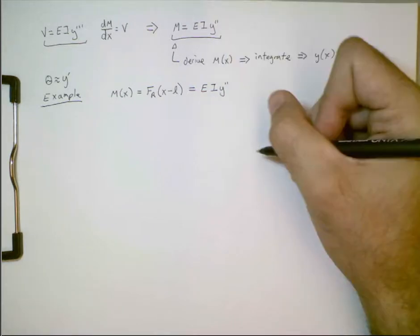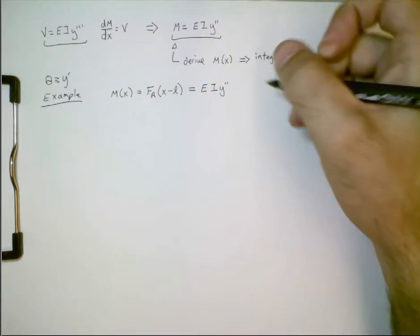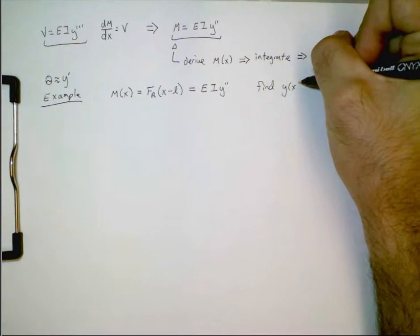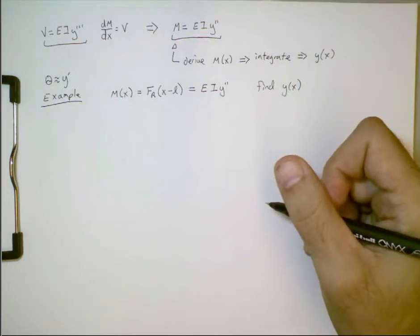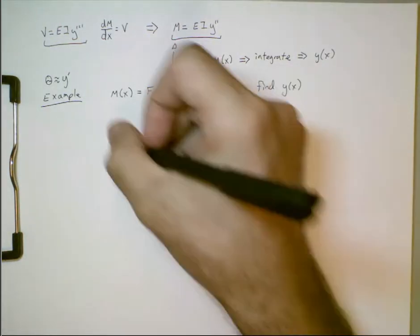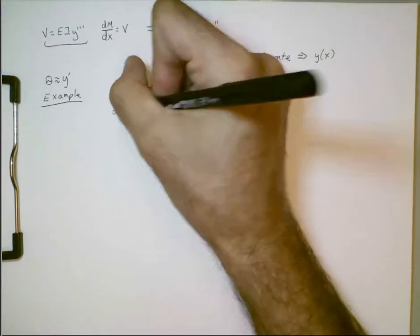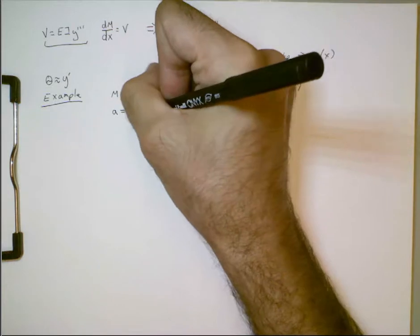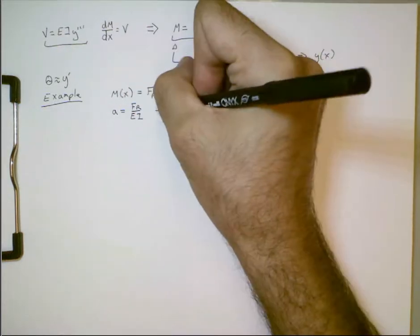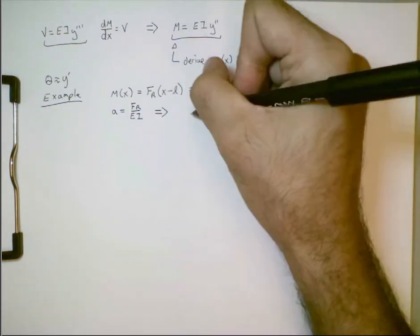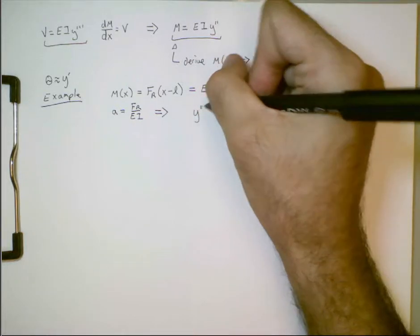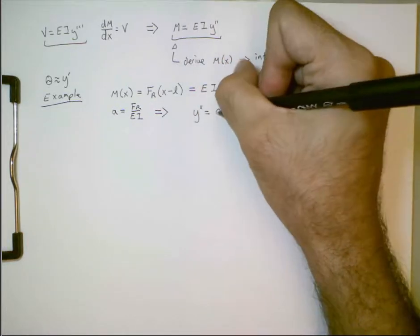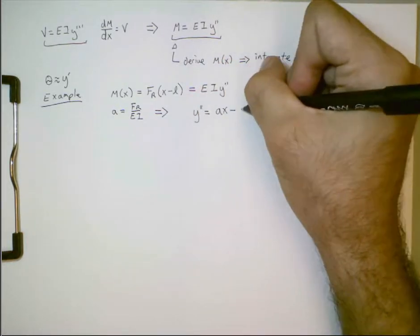So, we want to find y of x. And, just to make things easy, so I don't have to write out so much, let's set a equal to the radial force divided by ei. And then we can rewrite this differential equation. So, the second derivative of y then will be equal to ax minus al.